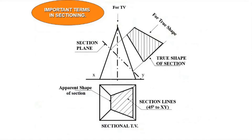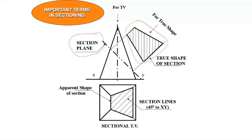The important terms we encounter in sections of solids: first, the section plane appears as a straight line — in the front view if the section plane is perpendicular to VP, and in the top view if the section plane is perpendicular to HP. Then there is the true shape of the section surface — true shape means the actual shape, how it will look if we see it parallel to that particular plane.